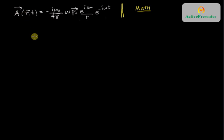This picks up from a previous module. The magnetic field as a function of position and time is given by the curl of this vector potential.